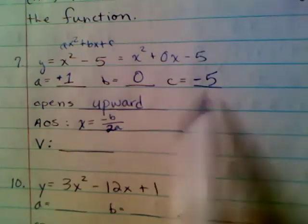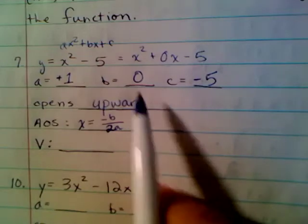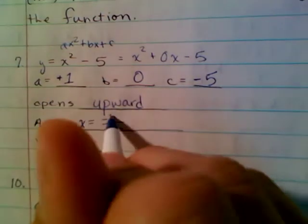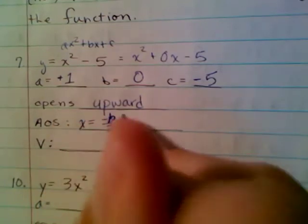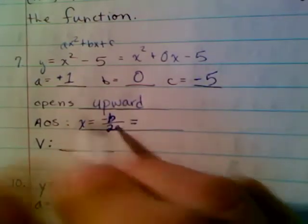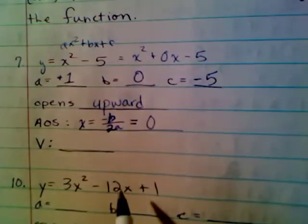We're not really going to need that c value directly, but we will definitely need the b value. You plug the b in here, you get negative 0 over 2a. Well, that's just 0. 0 divided by anything is going to be 0.